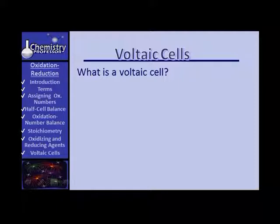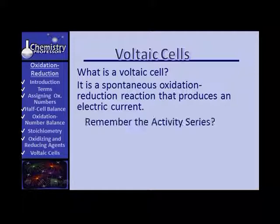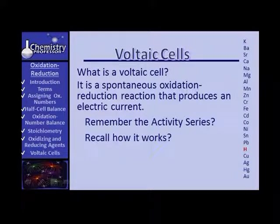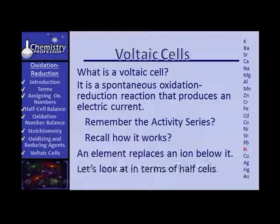Just what is a Voltaic cell? A Voltaic cell is a spontaneous oxidation-reduction reaction that, when it occurs, can produce an electrical current. Now, remember the activity series? Do you recall how it works? Do you recall that an element replaces an ion below the element? We're going to look at that in terms of half cells.